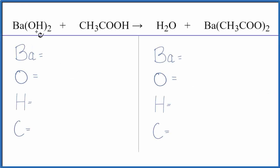To balance this equation, barium hydroxide plus acetic acid, let's count the atoms on both sides. Barium, we have one. Oxygen, one times two is two, plus these two here, total of four oxygen atoms.